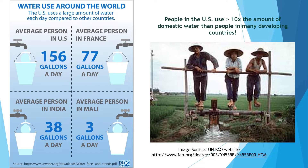Water use around the world is not equitable. The average person in the U.S. uses about 156 gallons of water a day. In France it's 77 gallons a day, 38 gallons a day in India, and only 3 gallons a day in Mali. So people in the U.S. often use more than 10 times the amount of domestic water than people in many developing countries.